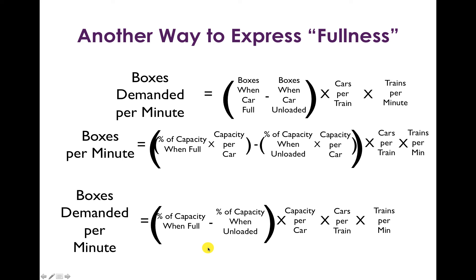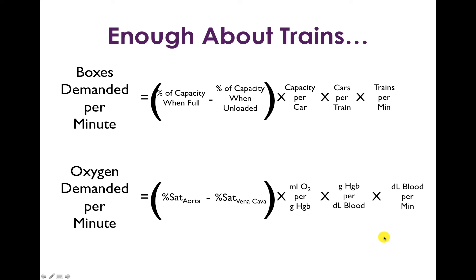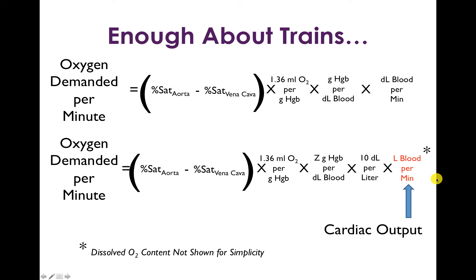We get the final equation, which is exactly analogous to the Fick equation: boxes demanded per minute equals the difference between capacity when the car is full and when it's unloaded, times the capacity per car, times the number of cars per train, times the number of trains per minute. Translated to oxygen: systemic oxygen demand per minute equals the difference in oxygen saturation between the aorta and vena cava, times milliliters of oxygen per gram of hemoglobin, times grams of hemoglobin per deciliter of blood, times deciliters of blood per minute — which is cardiac output, ultimately expressed in liters per minute with appropriate conversion factors.